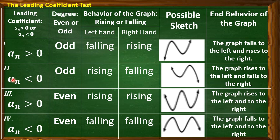Second case: the leading coefficient is less than zero — a negative value — and the degree is an odd number. The behavior of the graph on the left hand is rising and on the right hand it is falling. In other words, the graph rises to the left and falls to the right.